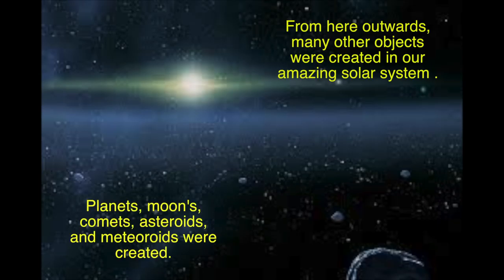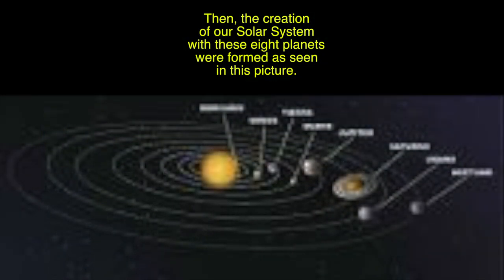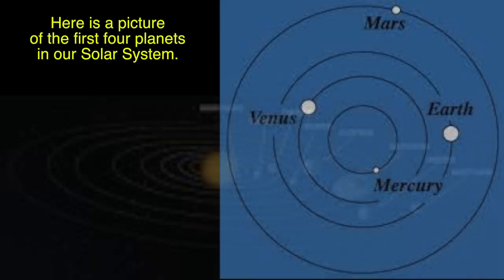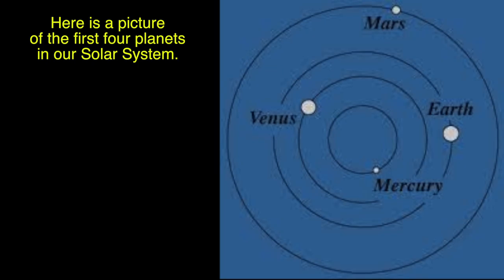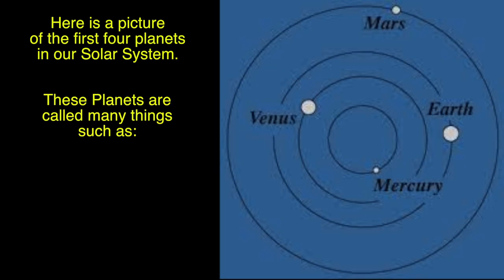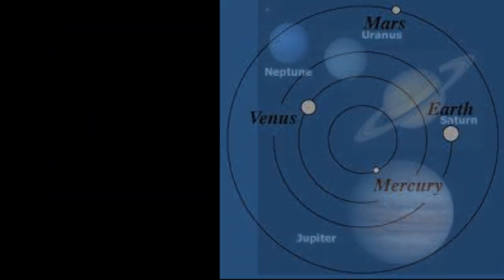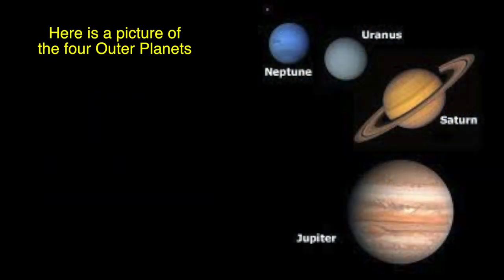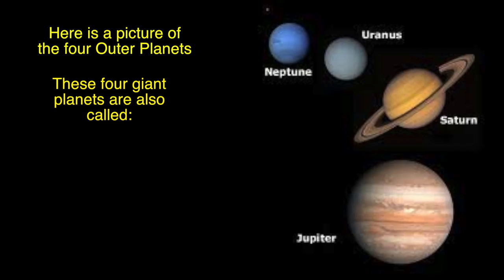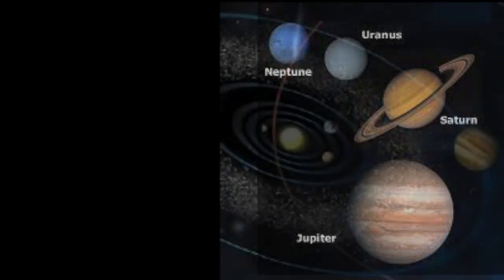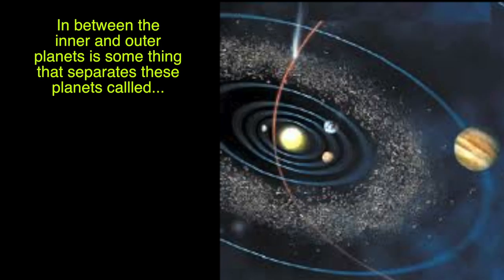Planets, moons, comets, asteroids, and meteoroids were created. The creation of our solar system formed these eight planets as seen here in this picture. Here is a picture of the first four planets in our solar system. These planets are called many things such as Terrestrial planets, Inner planets, or Minor planets. Here is a picture of the four outer planets. These four giant planets are also called Gas Giants. In between the inner and outer planets is something called the Asteroid Belt.